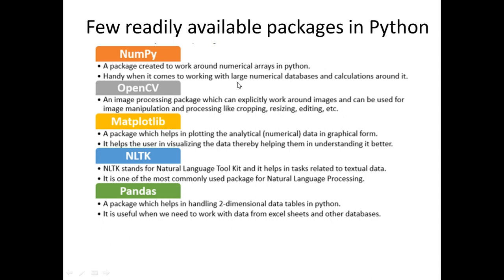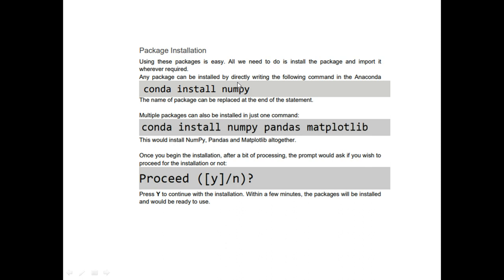OpenCV supports operations like cropping, resizing, or editing of images. The next is Matplotlib, which helps to draw charts and graphs and to analyze numerical data in a graphical format. The next is NLTK, which stands for Natural Language Toolkit, and it helps with tasks related to textual data — for example, if I want to understand the occurrences of a word in a text, I can use NLTK. The last one is Pandas, which helps us deal with two-dimensional data tables, and if there is data from Excel sheets and CSV files, I can make use of Pandas.